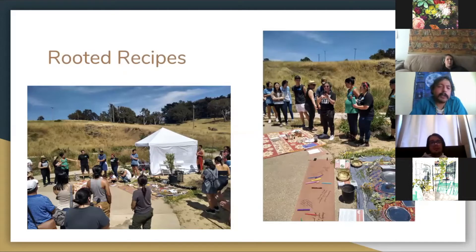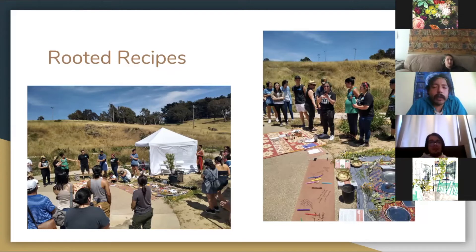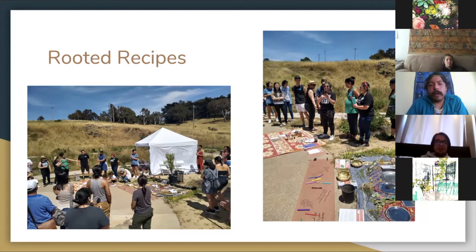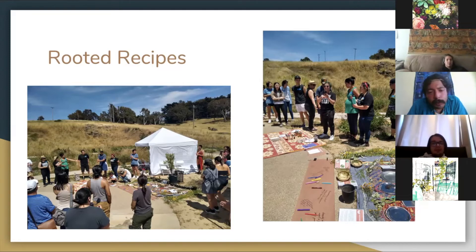This is Rooted Recipes — an API organization that used the farm for one of their events. A lot of their educational organizing connects API community to traditional foodways that have been lost through migration. This is a way to incorporate history, food, and living collective memory. We hosted them, they helped with some work on the farm, but it was mainly a way to create intercultural intergenerational dialogue with other people in our community.